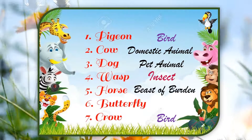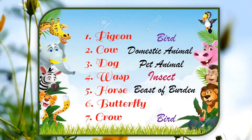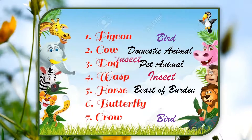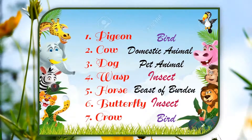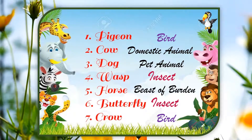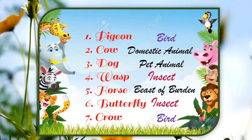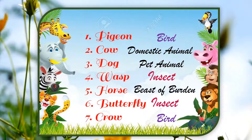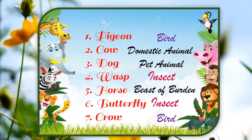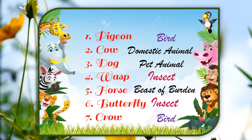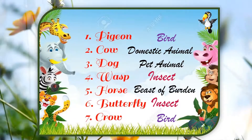Yellow color ka insect hota hai, bohut zor se kaatta hai. And a butterfly is also an insect. Toh meri list mein I have identified ki bird kya hain, pet animal kya hain, domestic animal kya hain, aur insect kya hain. Now you have to identify the insects in your list.